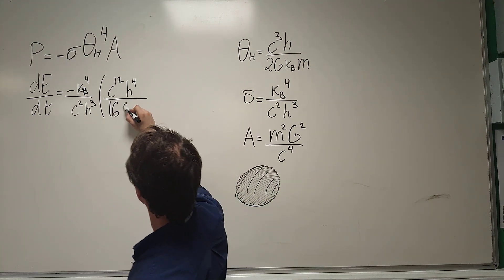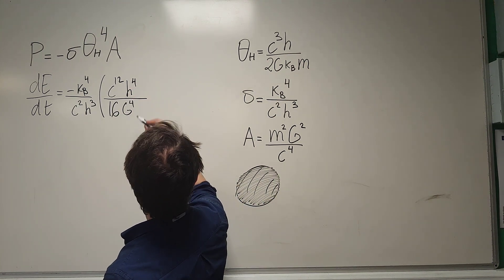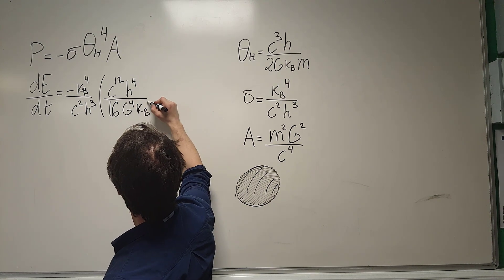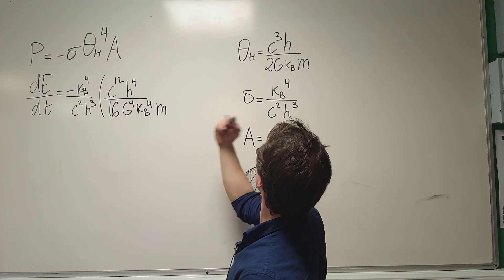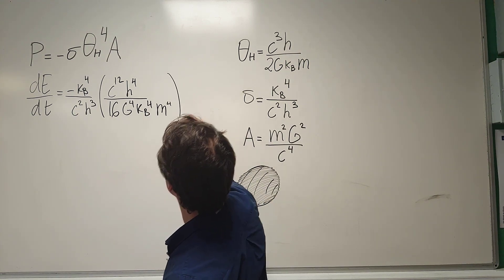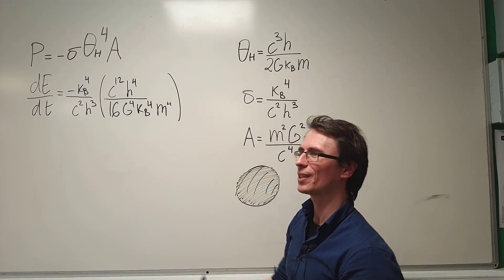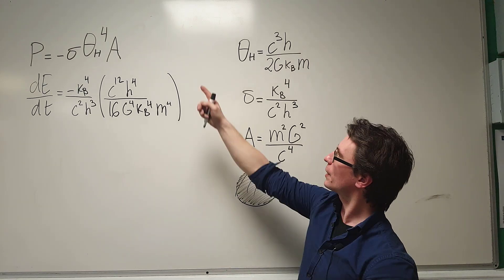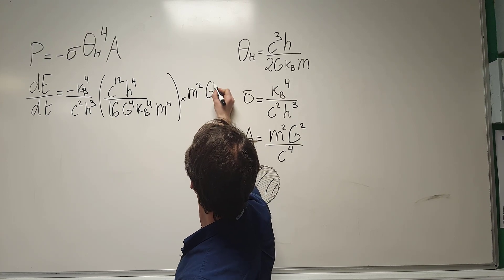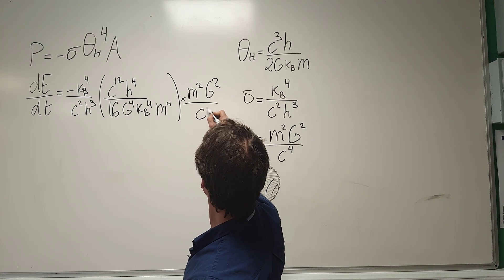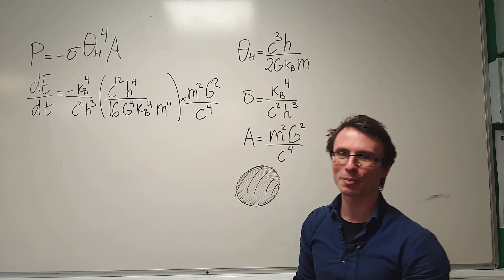Then we have the gravitational constant, G, raised to the power of 4. Boltzmann's constant, Kb, raised to the power of 4. The mass of the black hole, once again, raised to the power of 4. And this here is our Hawking temperature, all raised to the power of 4. Finally, let's plug in A. So, A will be M squared, G squared, all over C raised to the power of 4.